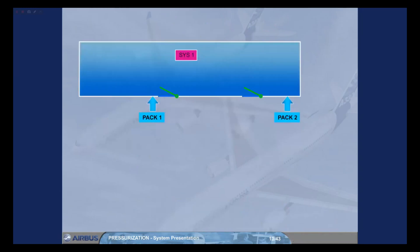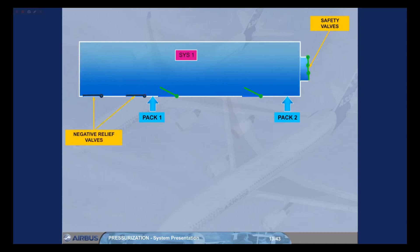Depending on the version, two or three safety valves are installed to avoid a cabin differential pressure from going too high or too low. One negative relief valve is installed below the cabin floor but above the flotation line. It is aft of left cabin door 1 and will assist the safety valves to avoid a cabin differential pressure from going too low. On the A340, a second negative relief valve is installed aft of left cabin door 2.